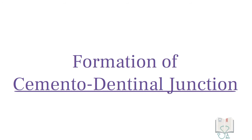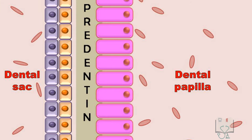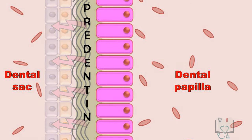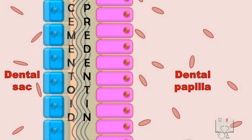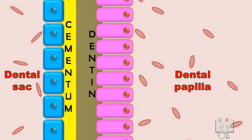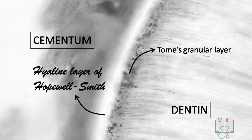Formation of the cementodentinal junction: as the odontoblasts differentiate, they start depositing dentine. This pre-dentine layer is predominantly made of collagen fibers and lacks odontoblastic processes. After getting appropriate signals, the cementoblasts differentiate and start depositing cementoid, again predominantly made of collagen fibers, which intermingle with fibers of pre-dentine such that after mineralization of both tissues a strong cementodentinal junction develops. The first layer of radicular dentine lacking odontoblastic processes is called the hyaline layer of Hopewell-Smith, present just outside the Tomes' granular layer.